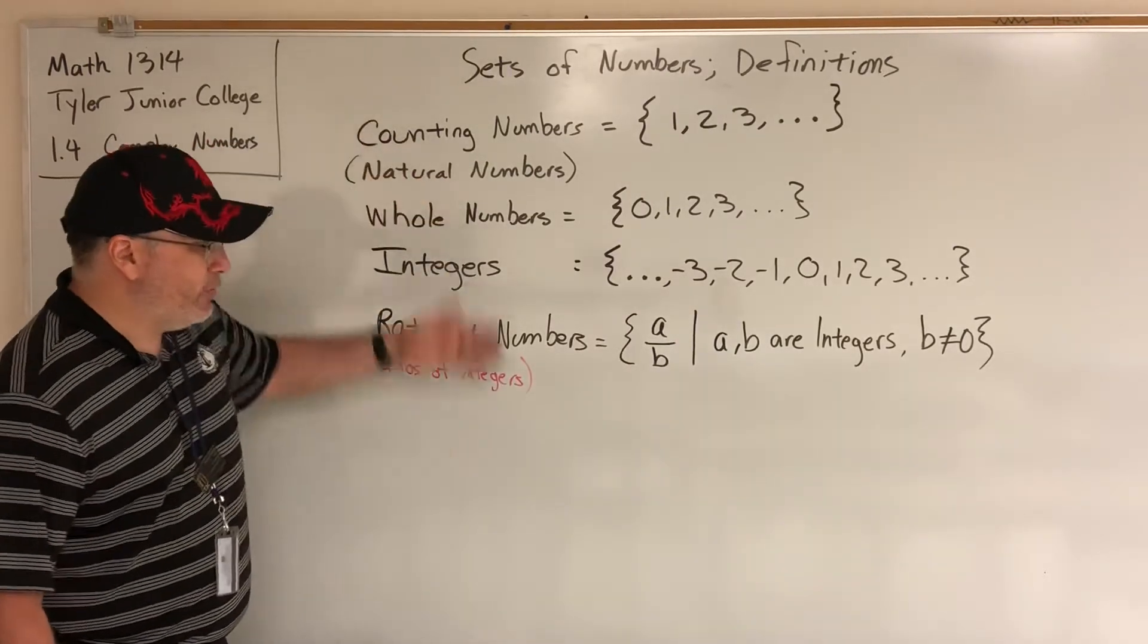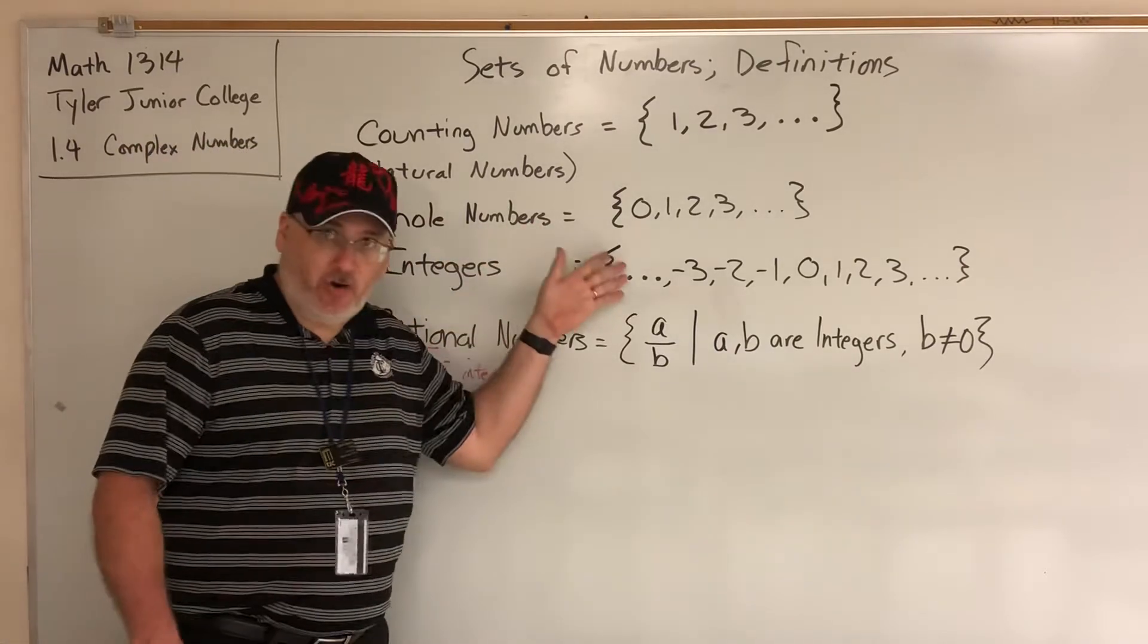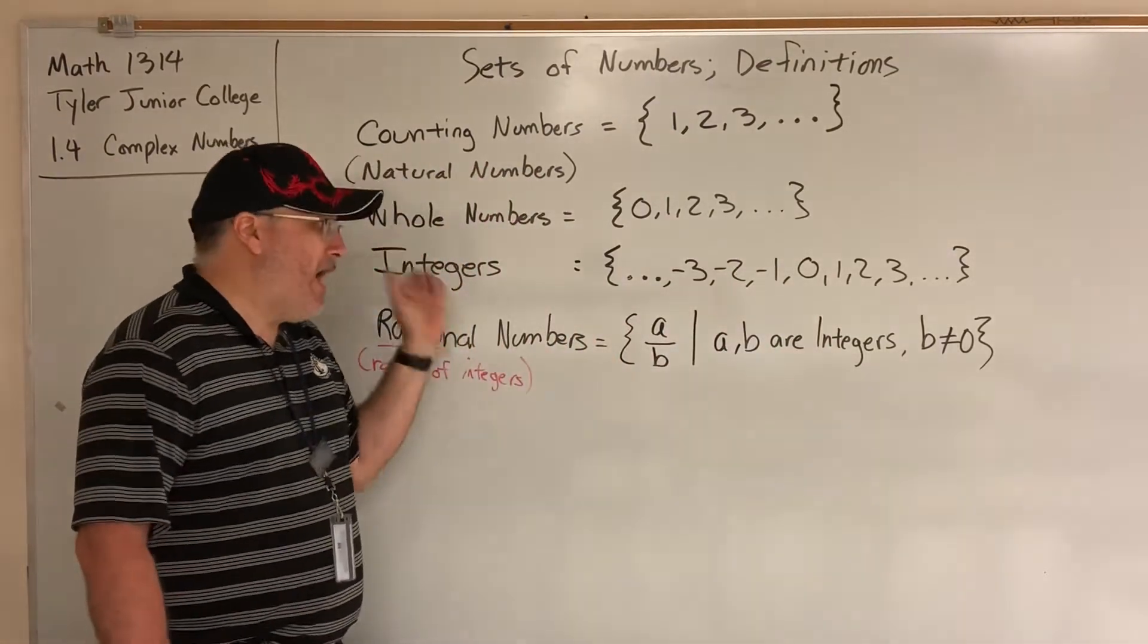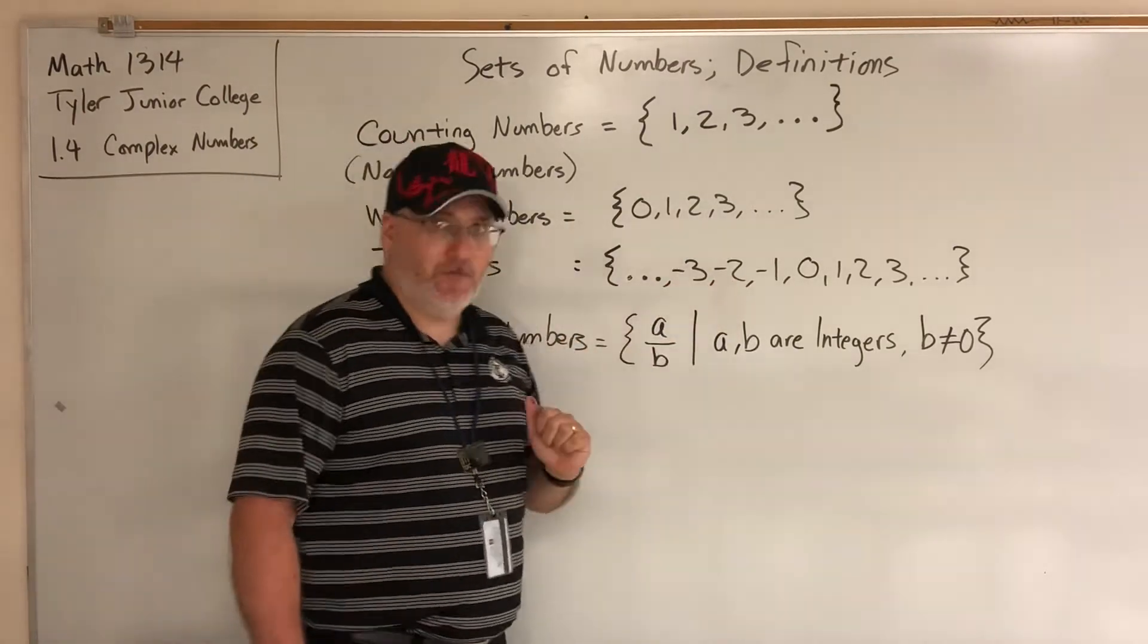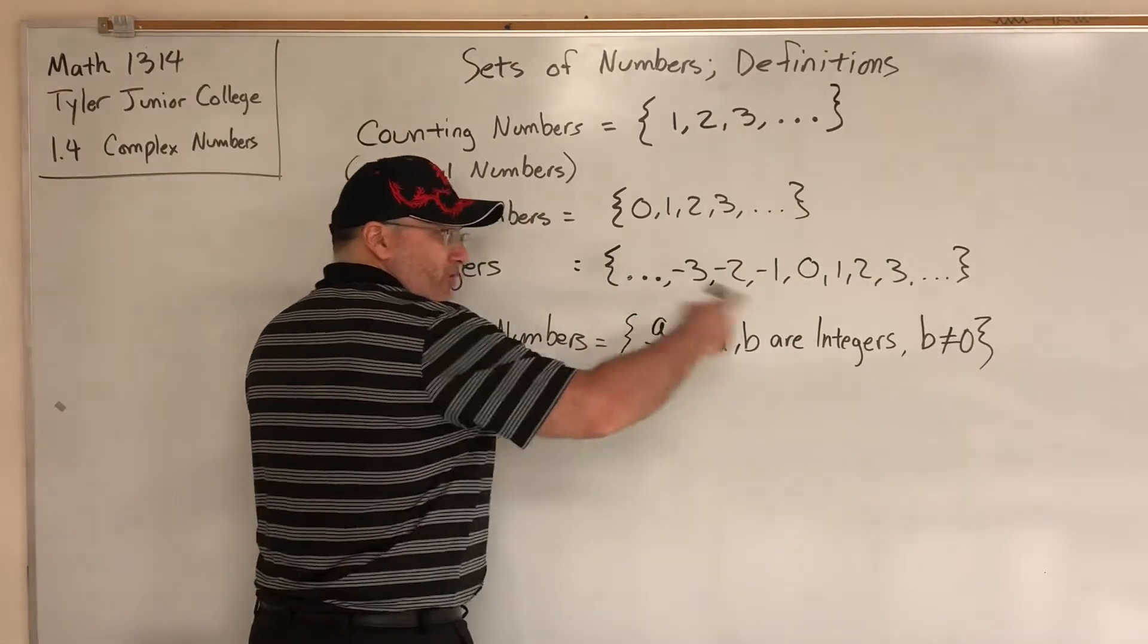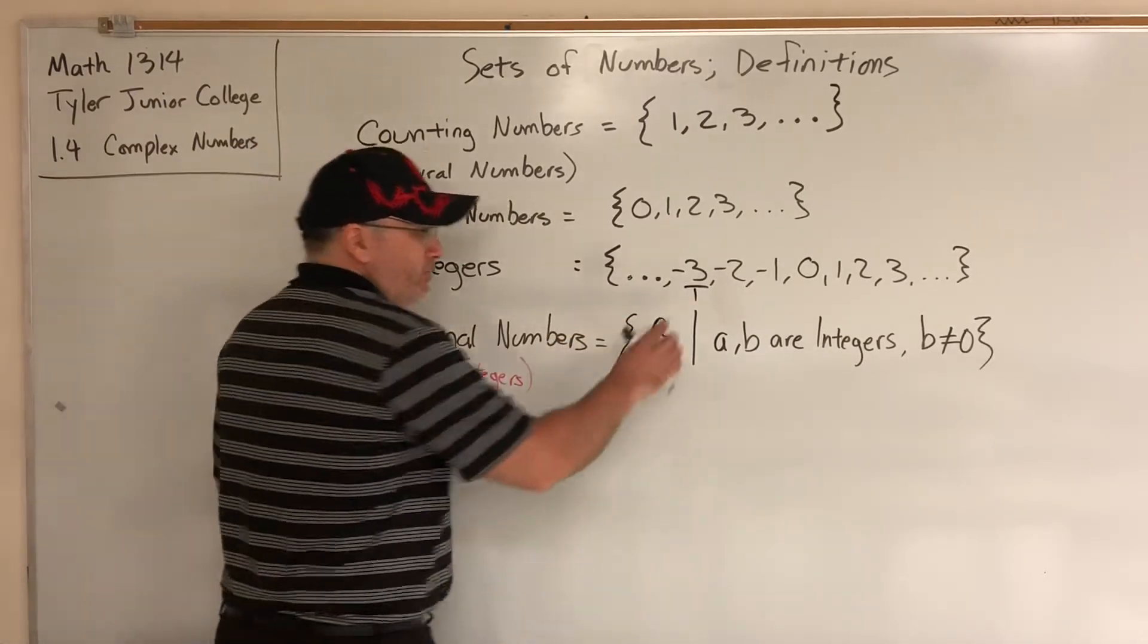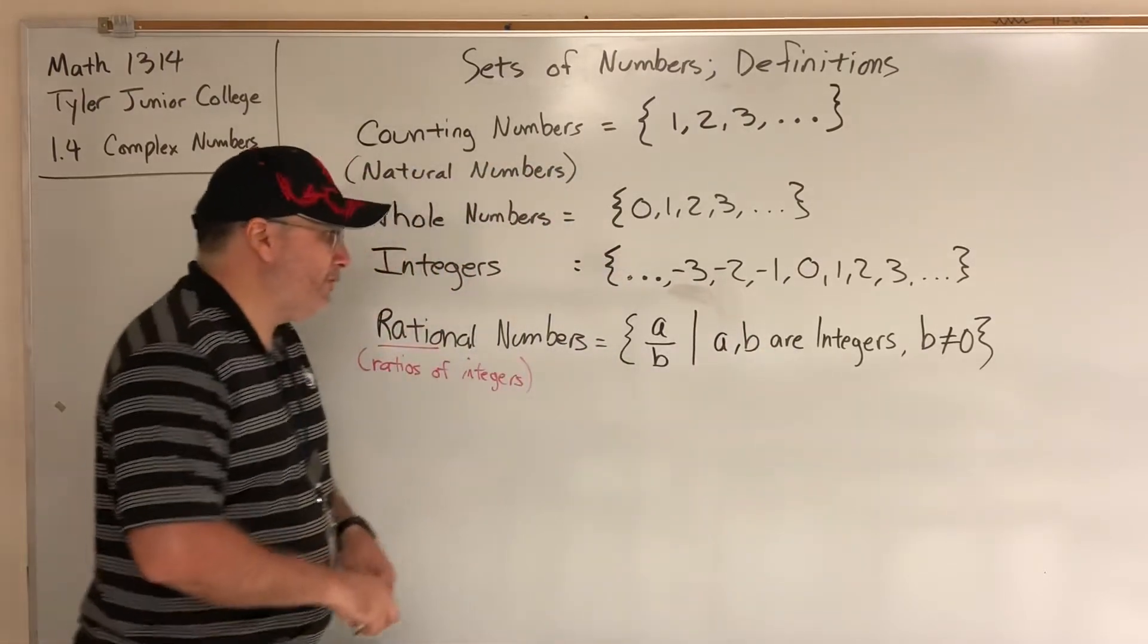Keep in mind that we are building larger sets, so when we go from the integers to the rational numbers, we are adding on to what we already have. These integers are included in this list of fractions. Why? Because every integer can be written as a ratio of integers by simply putting it over one. For example, I can justify that -3 belongs to the rational numbers because I can write it as -3/1. It fits the form of a rational number; therefore, it belongs to the rational numbers.